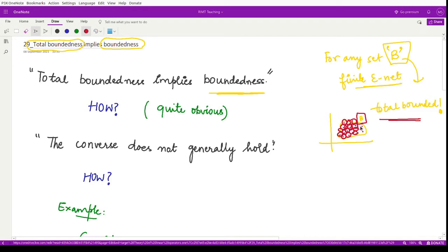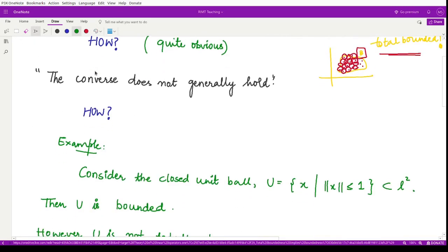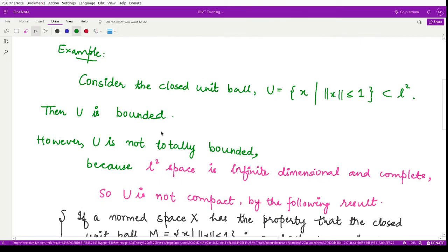it is finite in nature. However, the converse in this case generally does not hold. How is this true? We can see this through an example. Suppose we take a closed unit ball. That means we take the point origin and we take all the points within this disc or ball if we are in three dimensions. So within this ball which is having radius as one, all those x's whose norm is less than or equal to one is contained in this closed unit ball, and also this is a member of the space l2.